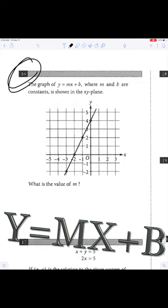The graph of y equals mx plus b, where m and b are constants, is shown. What's the value of m? m is the slope.